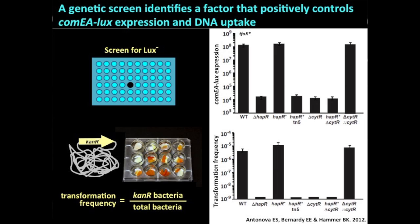Here are her results: we're looking at ComEA-luciferase expression. Here are the controls, here's the strain constitutively making TfoX and HapR, and here's our transposon mutant that is dark. She identifies the location of that transposon — it's in a gene called CytR. She deletes it, it has the same phenotype, she puts that deletion in various backgrounds, it behaves, and we complement by putting CytR back on the chromosome, restoring the phenotype.